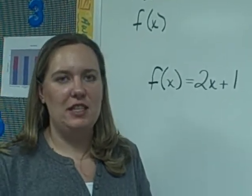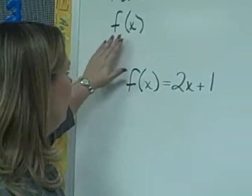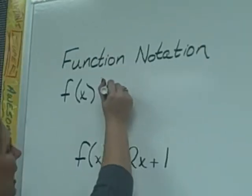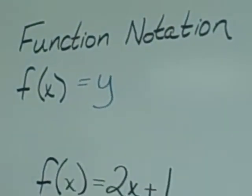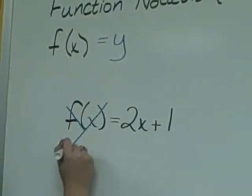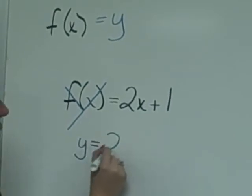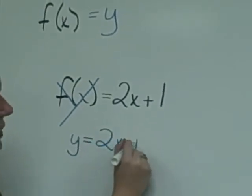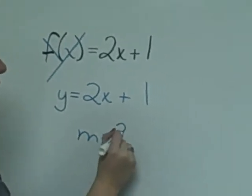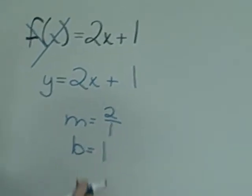f of x is just another way of writing y. If you have f of x, it means the exact same thing as y. You could actually write a y right on top of f of x and graph the equation y equals 2x plus 1, where your slope would be 2 or 2 over 1, and your y-intercept would be positive 1.